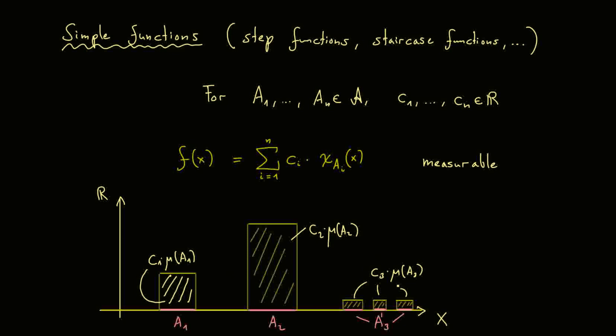For a meaningful integral definition, we need a sum of all these parts. So I of f is given by a sum where we have the same ci as before, but now not the characteristic function, but the corresponding measures of the sets. So we have ci times the measure of ai. And indeed, this will be our integral for simple functions in the end.